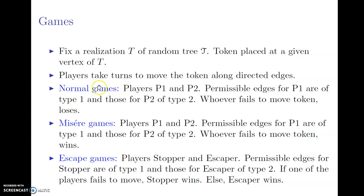The game I focus on for this talk is a normal game. There are two players P1 and P2; permissible edges for P1 are of type 1, and permissible edges for P2 are of type 2. They take turns to move the token. The rule for winning is that whoever fails to move the token first loses — the other person wins. There is a possibility of a draw where the game continues forever, in which case neither person wins. Two other games I study are misère games, where the rule is flipped so whoever fails to move wins, and escape games where you have a Stopper and Escaper, and the Stopper wins when either player fails to make a move — in escape games there is no possibility of a draw.